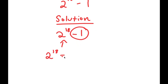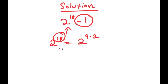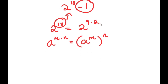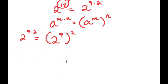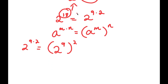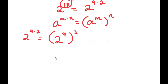2 to the power of 18 is the same thing as 2 to the power of 9 times 2 — I just wrote 18 as 9 times 2. An important property of exponents is that a^(m times n) equals (a^m)^n. So 2^(9×2) can be rewritten as (2^9)^2. Going back to my original problem with the minus 1, I get (2^9)^2 minus 1.